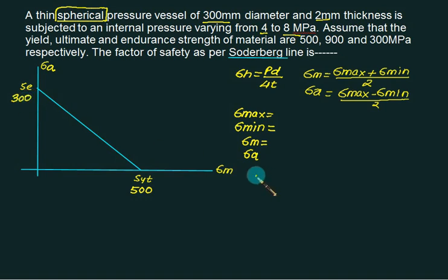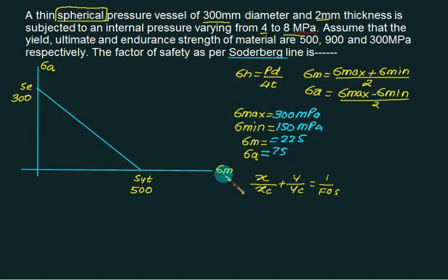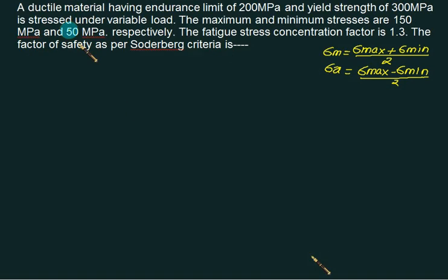One simple equation I will apply and write in this form: Sigma X upon Xe plus Y upon Yc. X is what? Sigma M. You find out the value from this, put up and solve it. If you substitute pressure equal to 8, diameter equal to 300 and thickness equal to 2, you will get Sigma max equal to 300 Megapascal. Then Sigma minimum value you will get 150. And if you use mean formula and amplitude formula, you will get mean equal to 225 and amplitude you will get 75. Then X value you have to take as Sigma M is 225 divided by X intercept is 500, plus Y value you have to take as Sigma A is 75, Y intercept is 300, is equal to 1 by factor of safety. Solve this factor of safety. Is it 1.42?